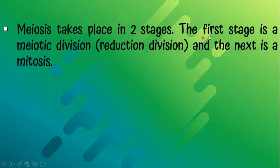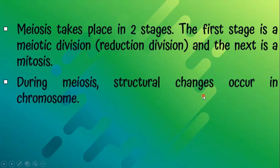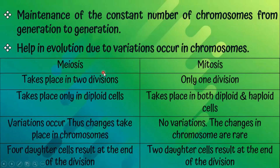Meiosis takes place in two stages. The first stage is meiotic division, also called the reducing division. The second stage is a mitotic division. During meiosis, fractional changes occur in chromosomes. Therefore, new variations or new characters appear in organisms, which is a very important phenomenon in evolution. The uses of meiosis are: maintenance of the constant number of chromosomes from generation to generation, and helping in evolution due to variations occurring in chromosomes.